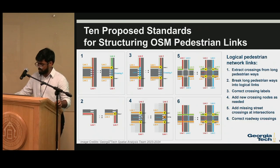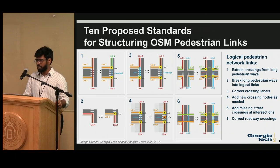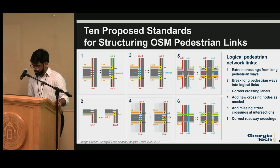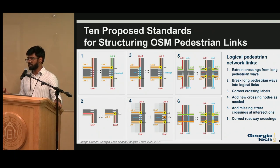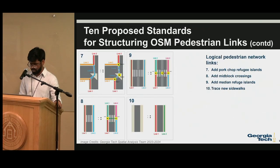The fourth standard: though OSM flags disconnected links, we found many crossing links that missed a node where they meet the road network. Fifth, many tools like Rapid are very accurate for sidewalks but tend to miss crossing links, so it is crucial to make sure crossing links are also traced out.